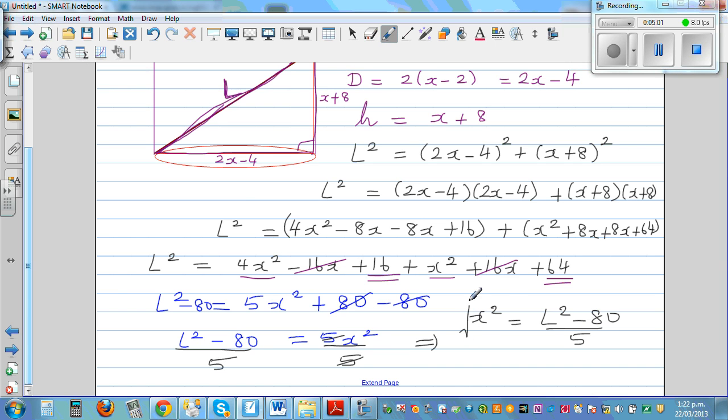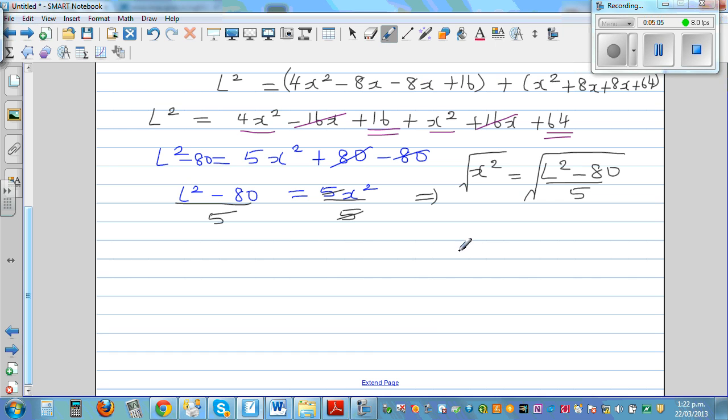And now I have to take the square root of this side, so x is equal to square root of L squared minus 80 divided by 5. And that's what you are supposed to do. So this is your final answer.